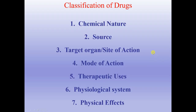About the classification of drugs — how do we generally classify drugs? First, by chemical nature; second, by source; third, by target organ or site of action; fourth, by mode of action; fifth, by therapeutic uses; sixth, by physiological system; and seventh, by physical effects.